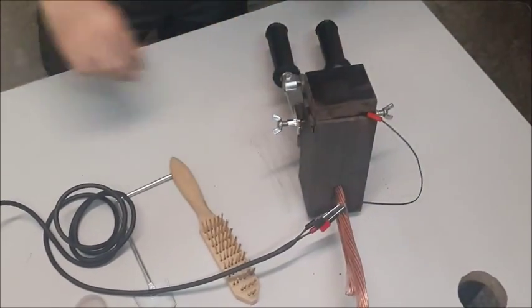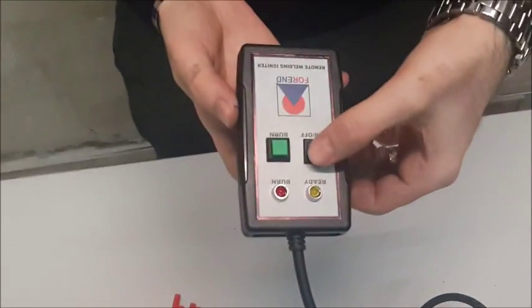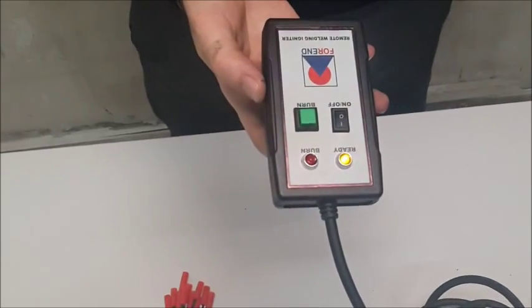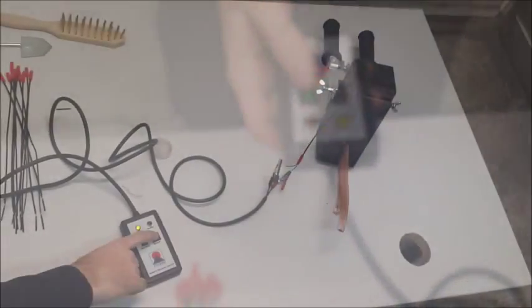Now the mold is ready to be ignited. First, we turn on the on-off button. When you see the red light, it's ready to fire. It will ignite. Press on burn.